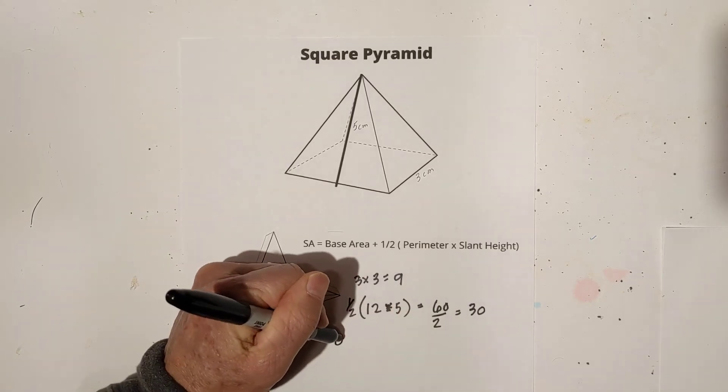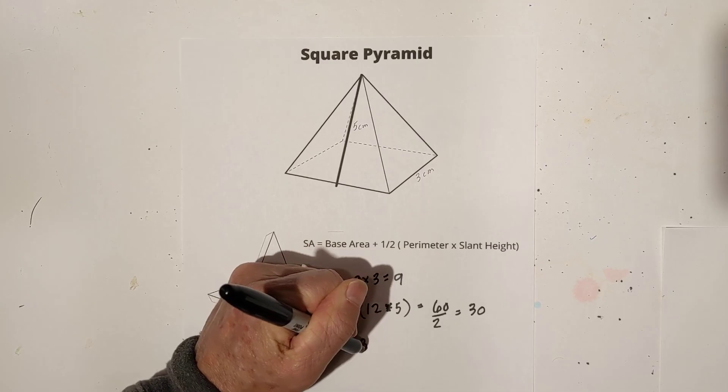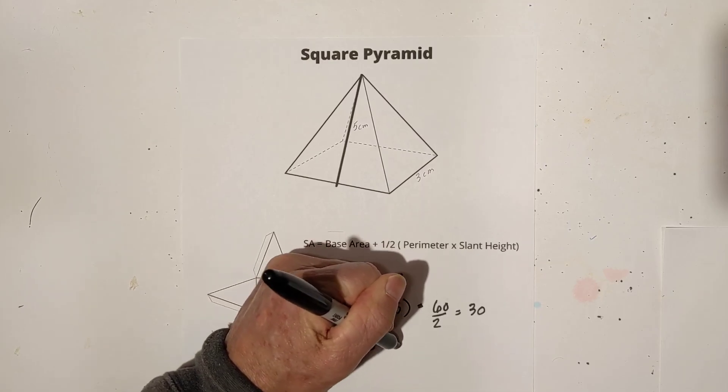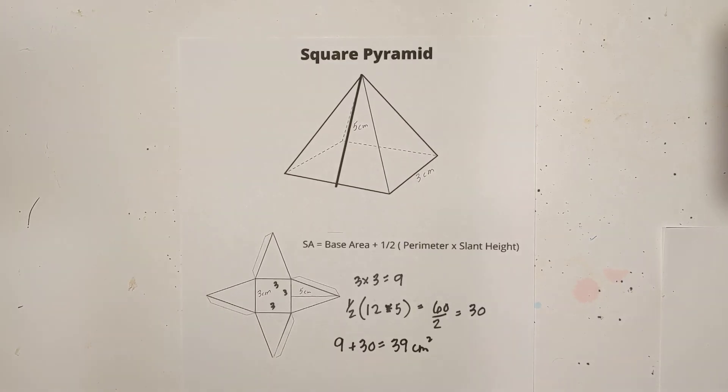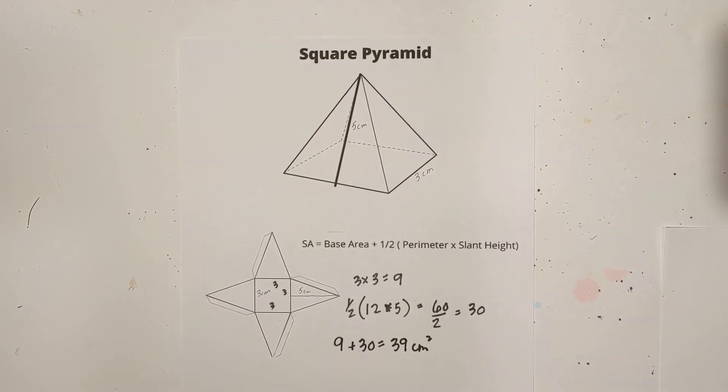So you're going to have nine plus 30, which equals 39. And remember, it is centimeters squared. So I hope that helps: two different ways to find the surface area of a square pyramid. Remember, kindness multiplies kindness. Be kind to someone today.